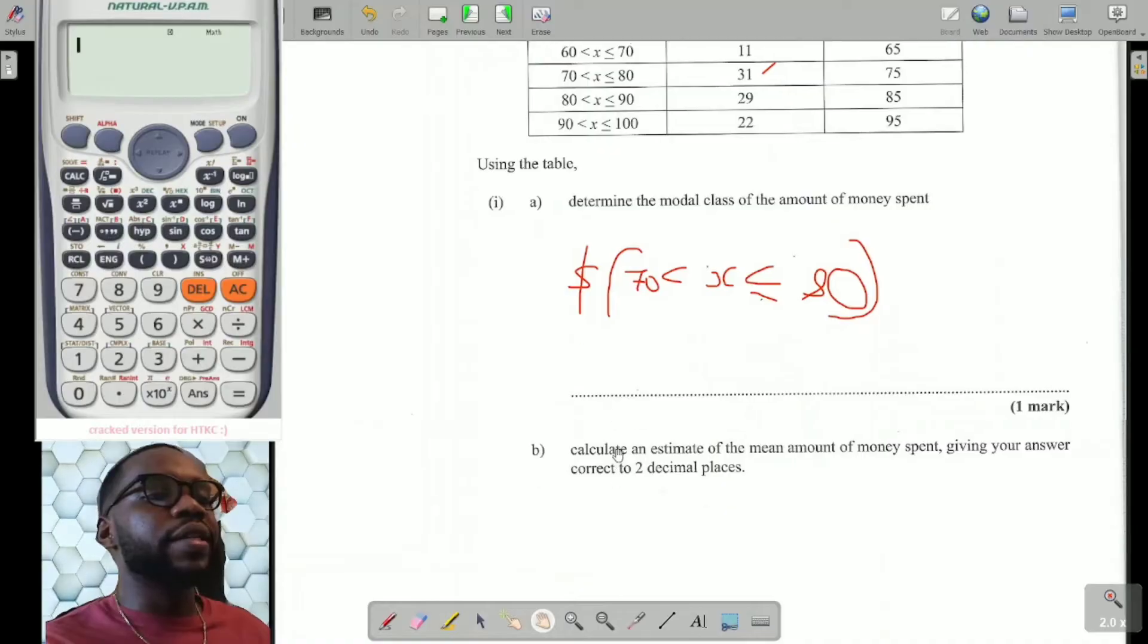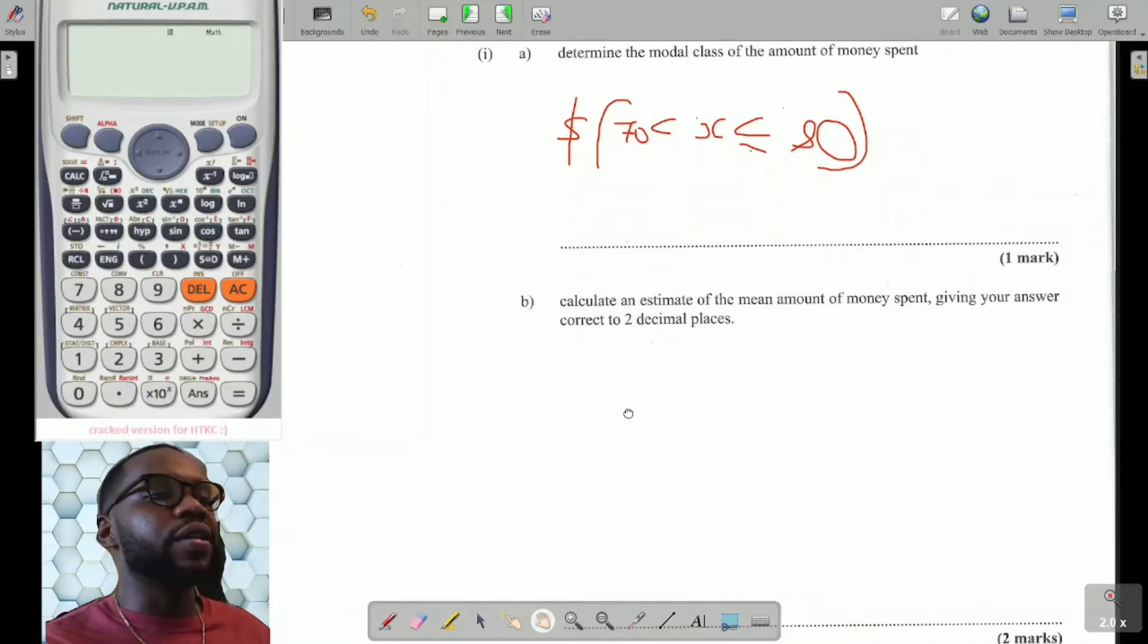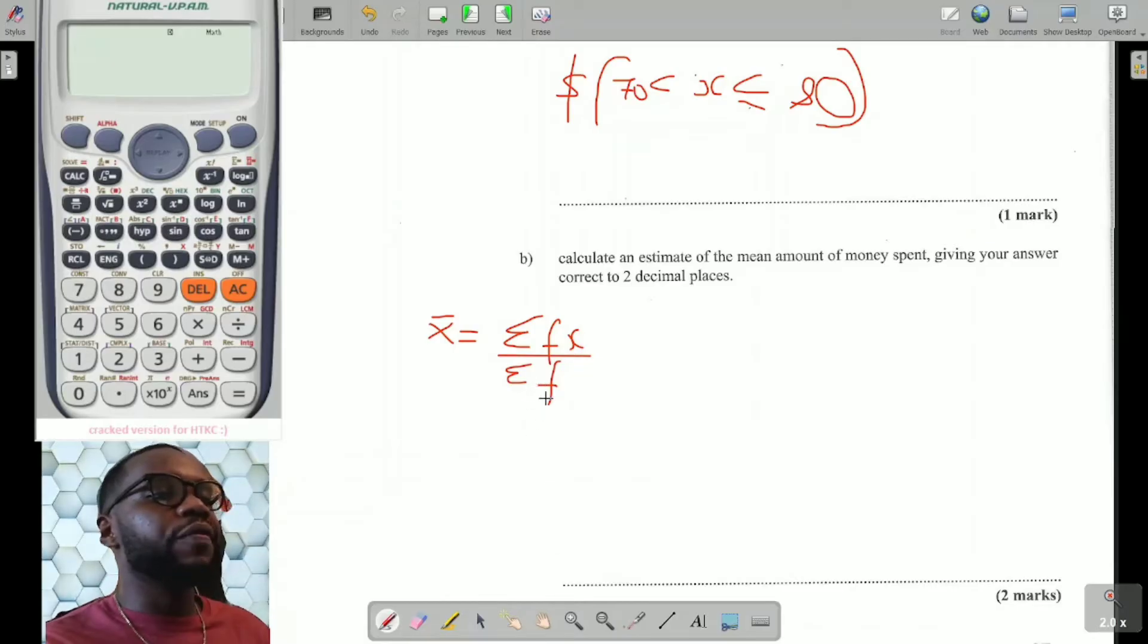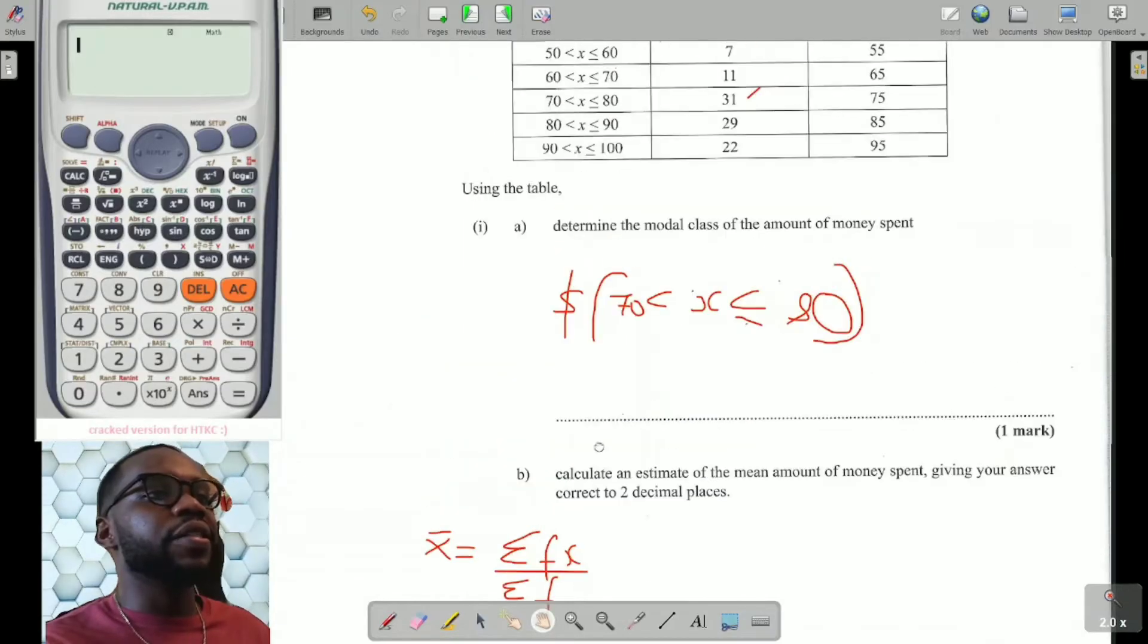Now part two, calculate an estimate for the mean amount of money spent, giving your answer correct to two decimal places. And you understand why two decimal places - because money itself has two decimal places. The formula for mean, as you know it, is x̄ = ΣFX / ΣF. F is the frequency, and in this case, X represents the data midpoint value.